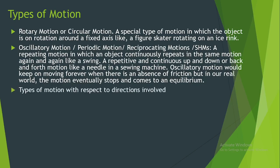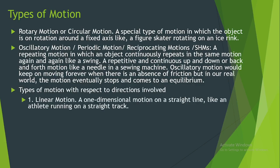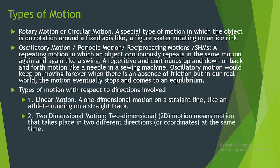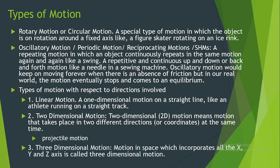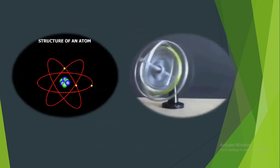Motion can also be classified according to the number of directions involved. We have linear motion — a one-dimensional motion on a straight line, like an athlete running on a straight track. Followed by two-dimensional (2D) motion, which means motion that takes place in two different directions or coordinates at the same time. One example of 2D motion is projectile motion. We also have three-dimensional motion — motion in space which incorporates all the X, Y, and Z axes, just like the movement of electrons in the atom and the movement of a gyroscope.